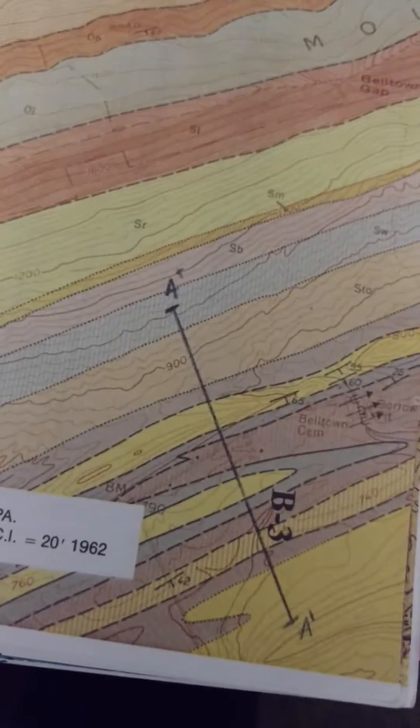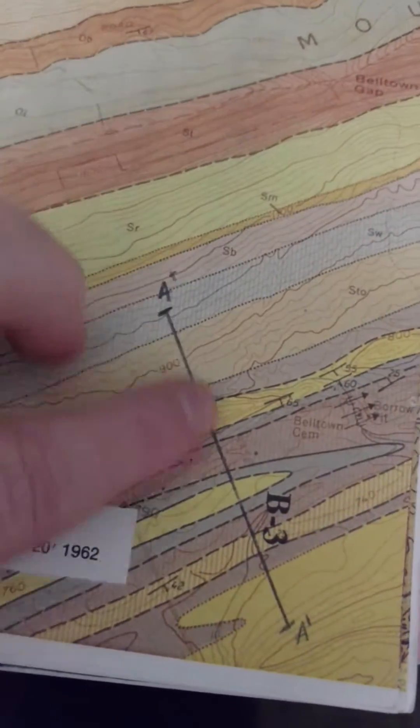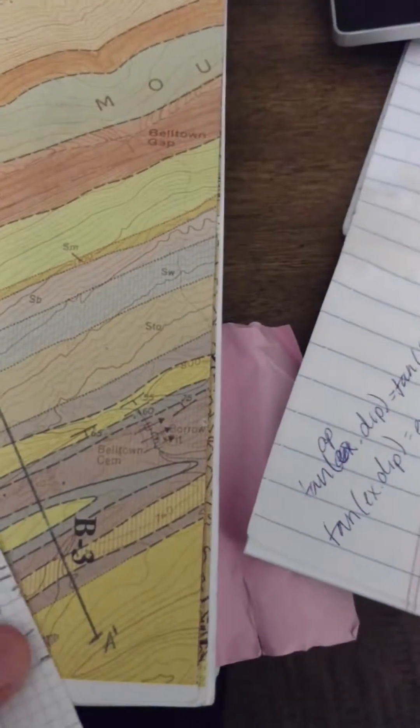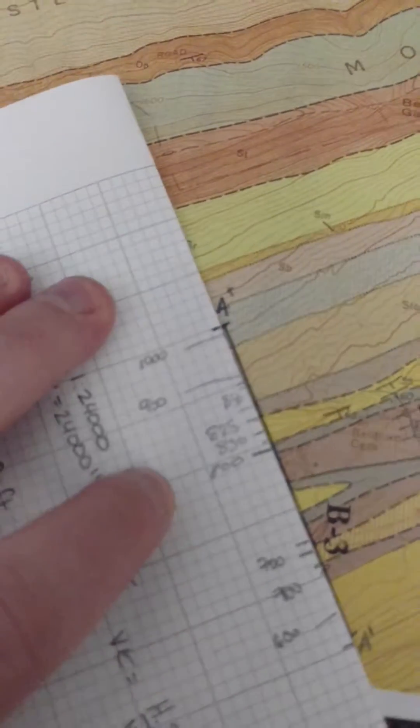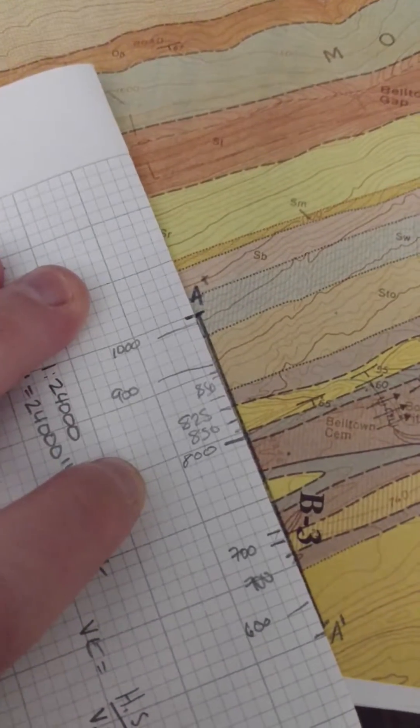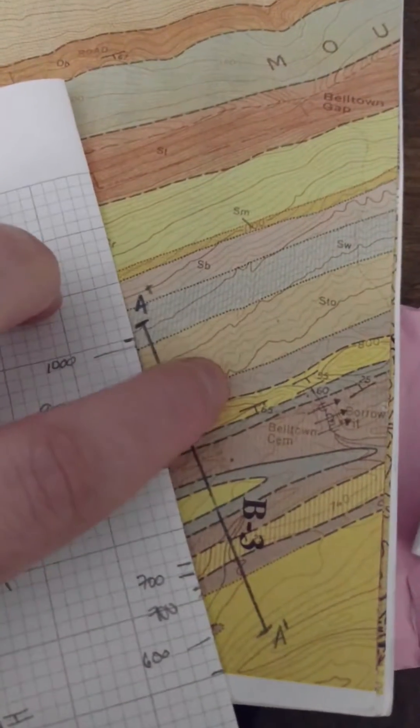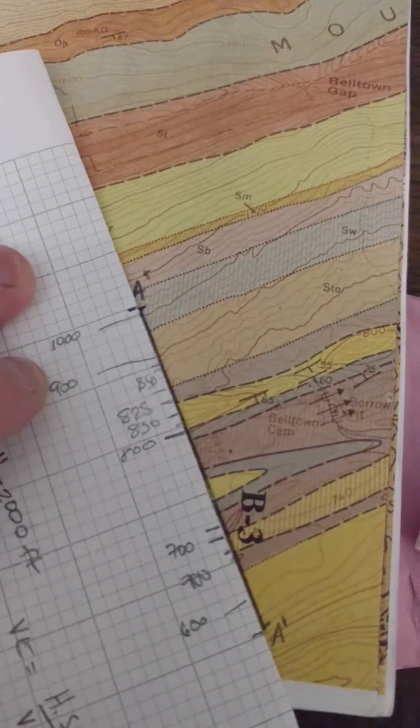So I went along my line that I had made, and I made all of those important tick marks at the dark contour intervals that are the dark red, and the ones that seemed important at the light red.